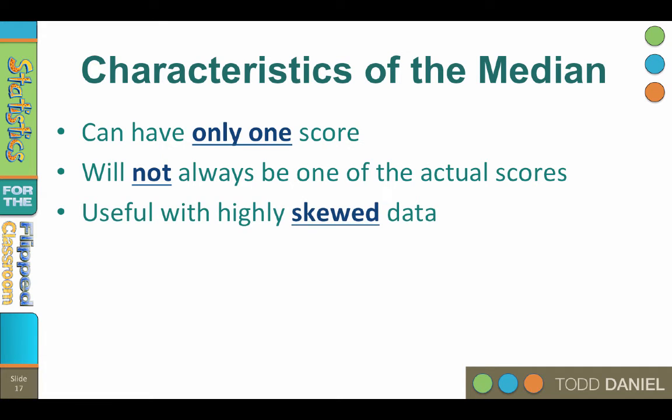The median can be useful with highly skewed data, and this is because the median is minimally susceptible to outliers. Adding an outlier, no matter how large, moves the median toward the outlier one space at a time. So if one of the lab rats goes to sleep in the maze, the median can still be useful.